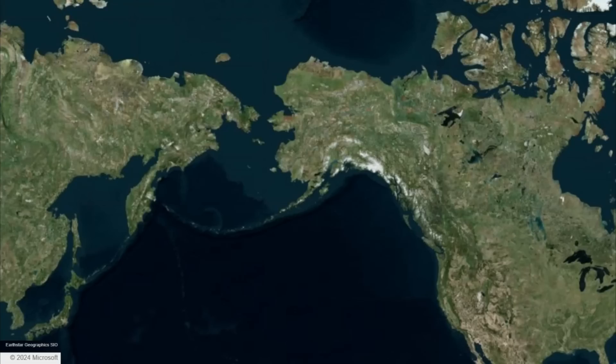The following presentation covers some of the earliest known archaeological sites in North America that occur before and during the last glacial maximum period. We are looking at the Bering Sea at the center of this map. Asia is on the left side of the Bering Sea and North America is on the right side of the Bering Sea.